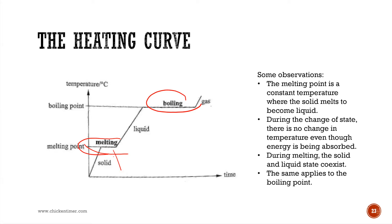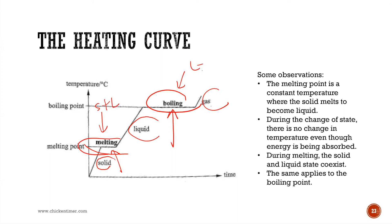The first flat line on the graph is the melting point, and the second flat line is the boiling point. Before the first horizontal line, the substance is in solid form. After melting, everything has converted to liquid. Before the second horizontal line, it's liquid, and after the boiling flat line, you see gas.